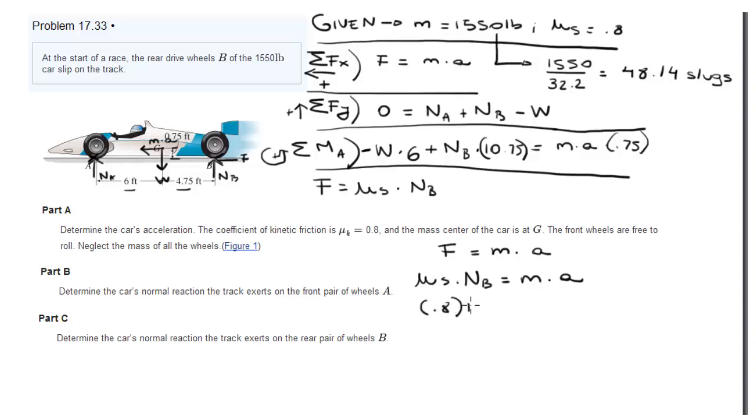Let's plug in some numbers. We get 0.8 times the normal, the mass is 48.14 times the acceleration, which the acceleration is the one we're trying to find on part A. Now from equation two we know that the normal forces add up to the weight, which is 1550 pounds. This is another equation.